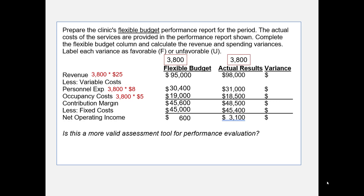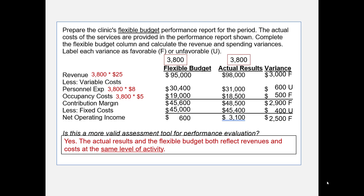Now we can compute the variances. The revenue variance is $3,000 favorable. Personnel expense is $600 unfavorable — we spent more than the budget indicated. Occupancy costs are $500 favorable. The contribution margin variance is $2,900 favorable. The fixed cost variance is $400 unfavorable, and the net operating income variance is $2,500 favorable. Is this a more valid assessment? Yes — the actual results and the flexible budget both reflect revenues and costs at the same level of activity: the actual activity level of 3,800 patients.